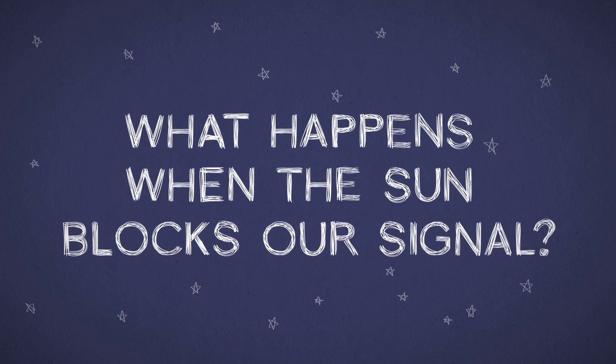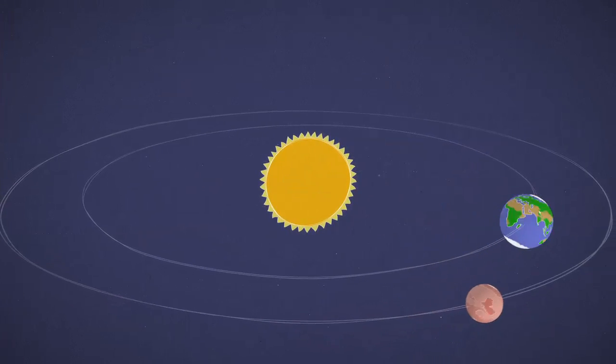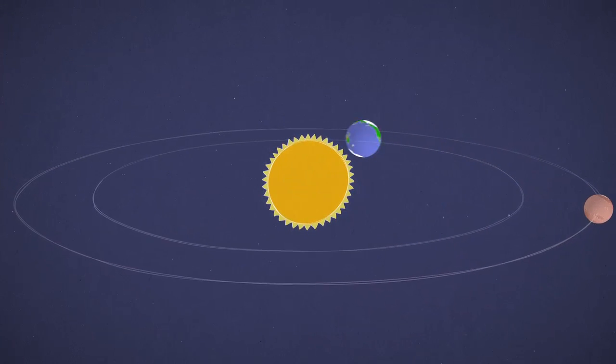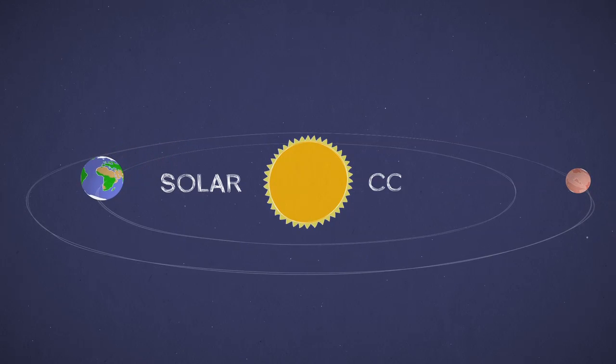What happens when the Sun blocks our signal? About every two years, Earth and Mars wind up on opposite sides of the Sun. That's called solar conjunction.